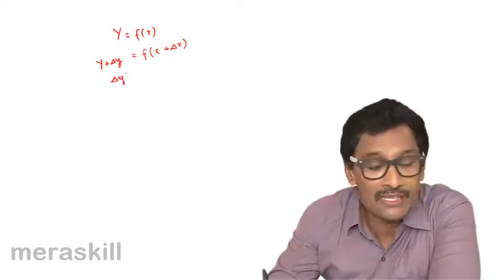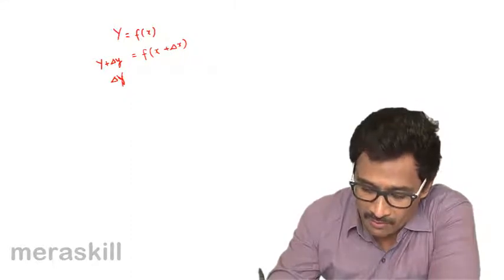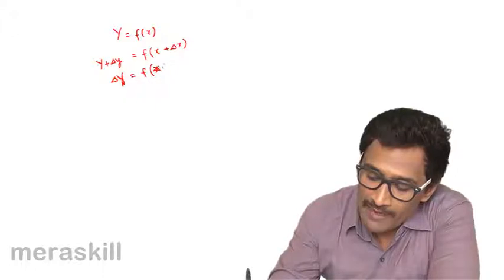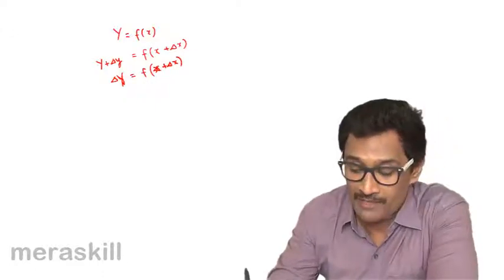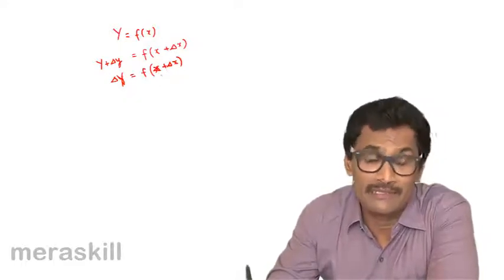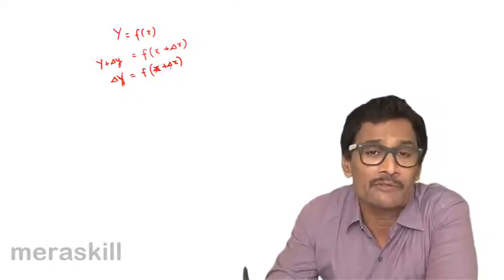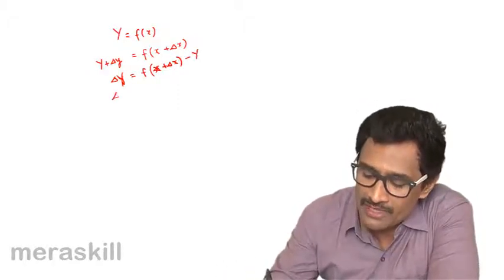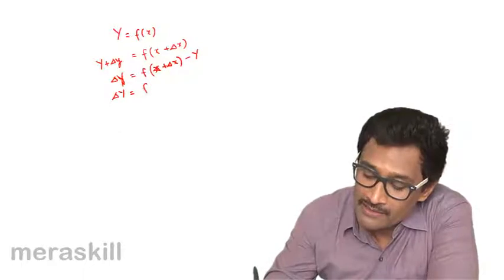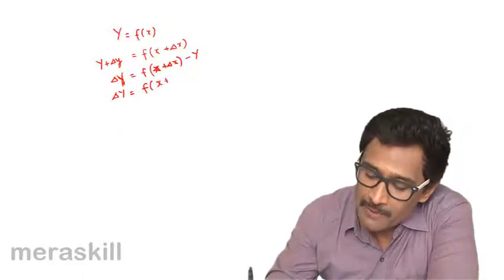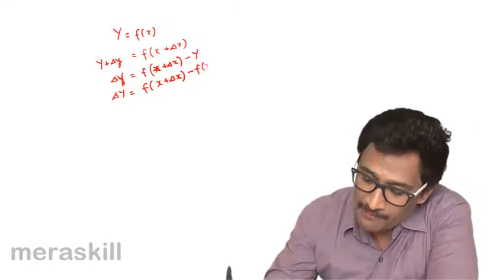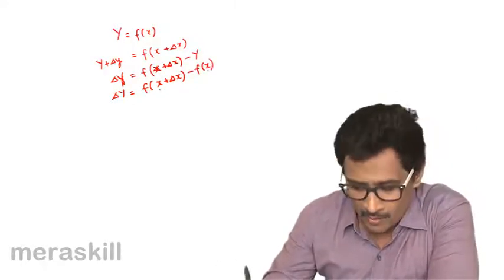A small change in x causes a small change in y. So delta y — the change in y — is nothing but f of x plus delta x, that is the function when x's value is x plus delta x (in this case 3.001), minus y. So we can write: delta y equals f(x + delta x) minus f(x).